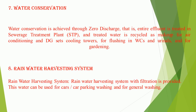Feature 7: Water Conservation — water conservation is achieved through zero discharge; that is, the entire effluent is treated in a sewage treatment plant (STP), and treated water is recycled as makeup for air conditioning and DG set cooling towers, for flushing in WCs and urinals, and for gardening.